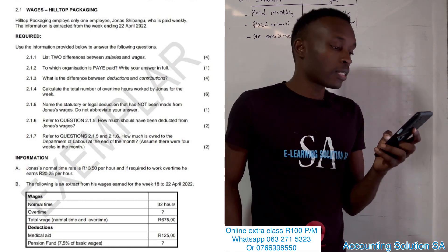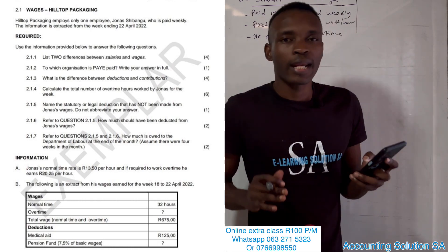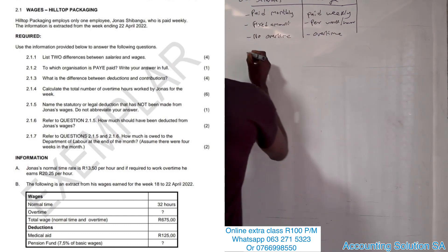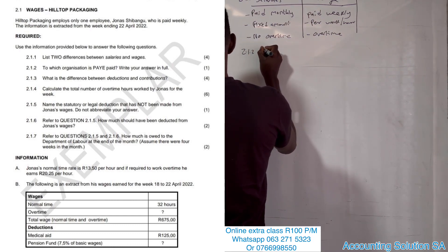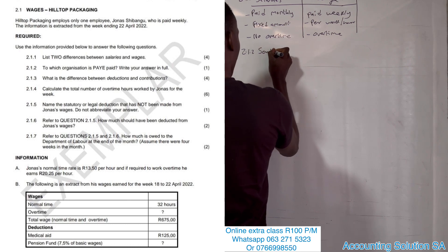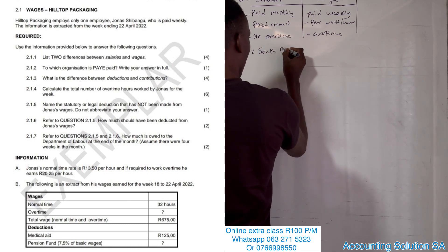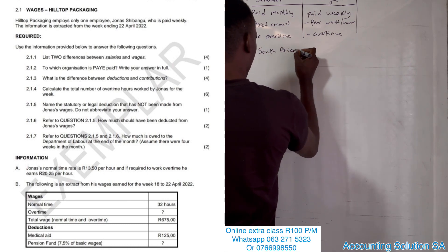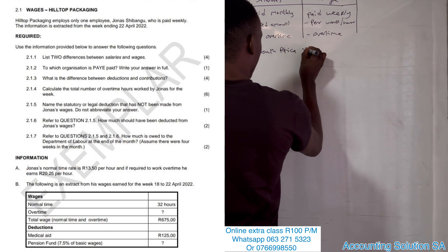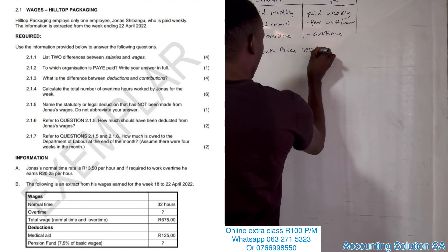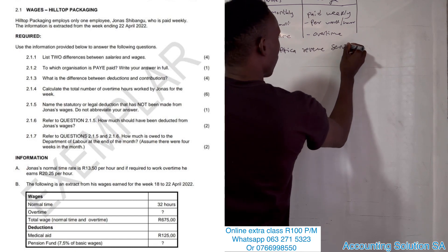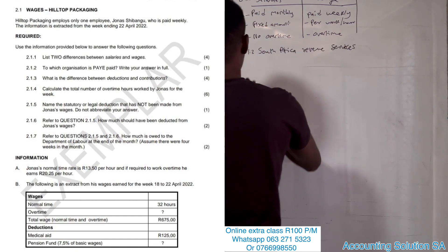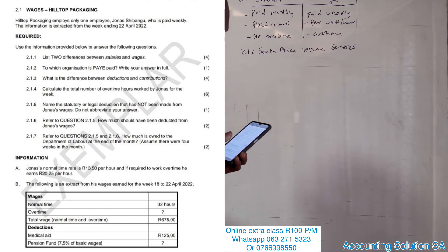We know it is SARS, but here they indicate you must write it in full. SARS stands for the South African Revenue Service. Alright, then the following question asks: what is the difference between a deduction and a contribution? That's four marks.